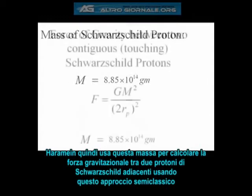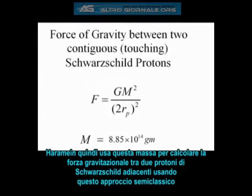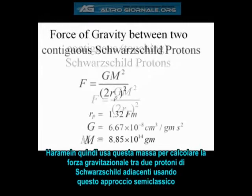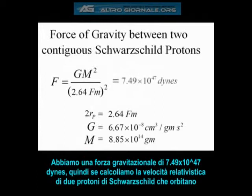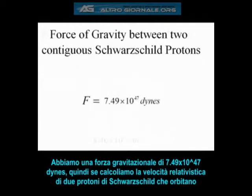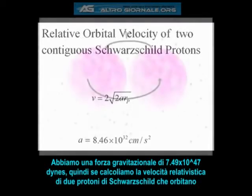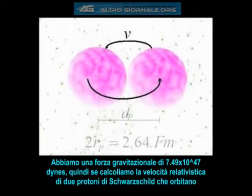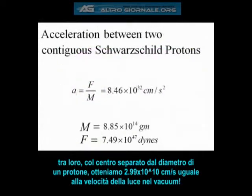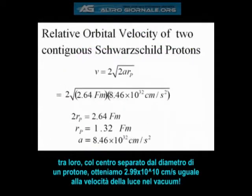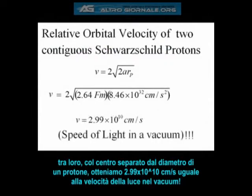Haramein then uses this mass to calculate the gravitational force between two contiguous Schwarzschild protons using the semi-classical approach, yielding a gravitational force of 7.49 times 10 to the 47th dynes. Calculating the relativistic velocity of two Schwarzschild protons orbiting each other with their centers separated by one proton diameter gives 2.99 times 10 to the 10th — equal to the speed of light.